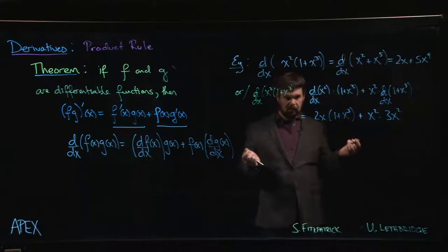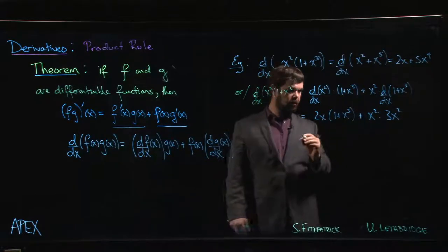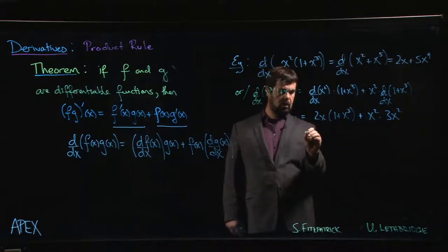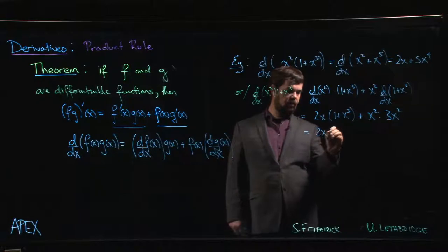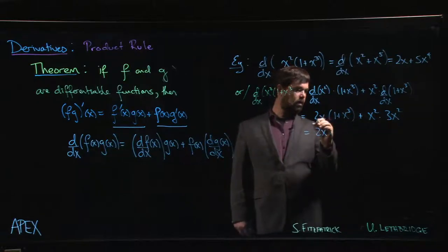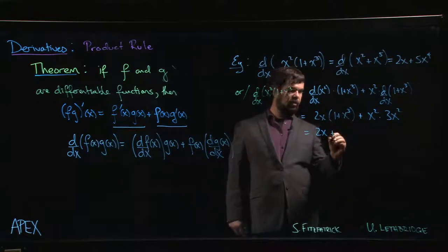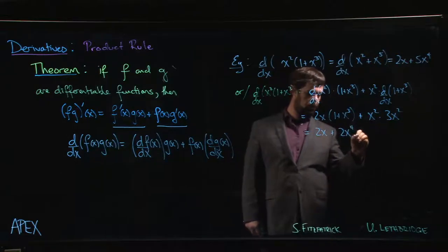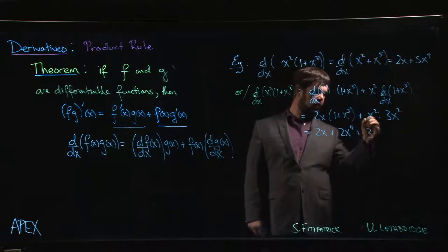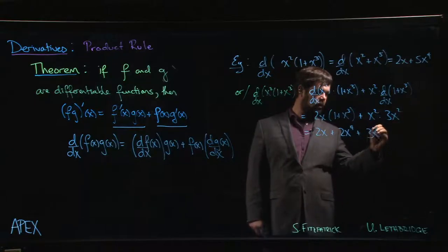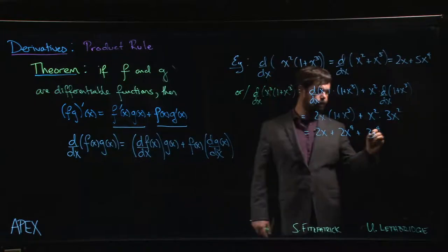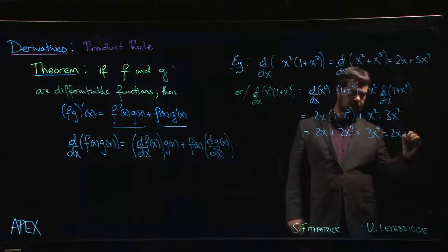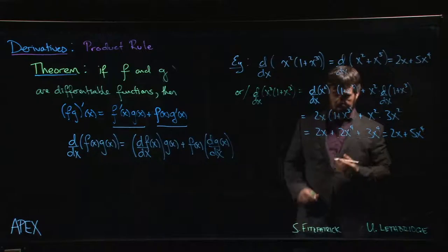We get a very different looking answer, but if we simplify: 2x times 1, we get 2x plus—let's see—x times x cubed is x to the 4, so we get 2x to the 4. Here we have 3x squared times x squared, also x to the 4, and so we do indeed get the same answer as above.